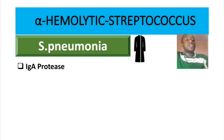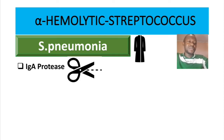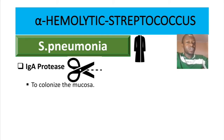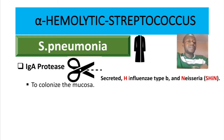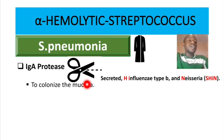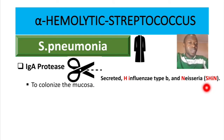The second virulence factor is IgA protease — an enzyme which cleaves IgA immunoglobulins, represented by a specific symbol. The cleaving of IgA enables colonization of the mucosa. IgA protease is also secreted by Haemophilus influenzae, particularly type B, and Neisseria species. Adding Streptococcus pneumoniae, you get the mnemonic SHEEN: S for Streptococcus pneumoniae, H for Haemophilus influenzae, and N for Neisseria species.